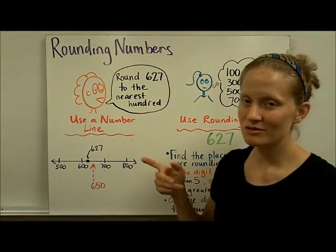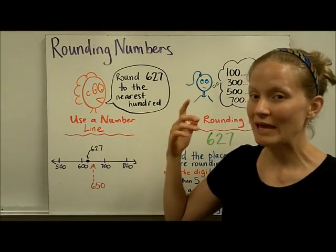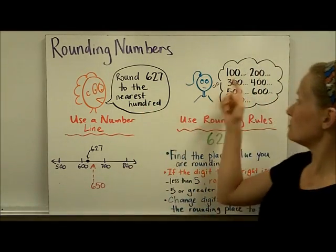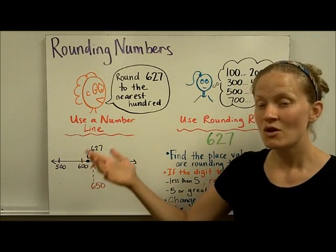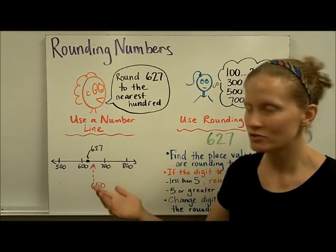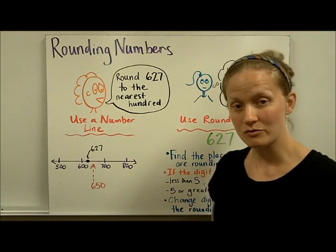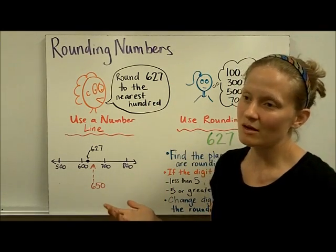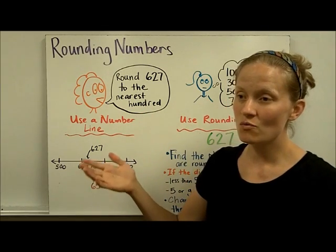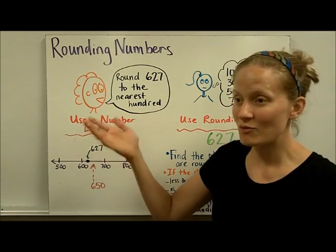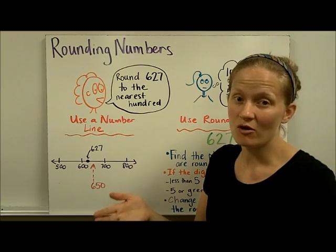When you're asked to round to the nearest hundred, you can think about it like this: if you counted by hundreds — 100, 200, 300, 400, 500, 600, 700 — which hundred would your 627 fall closest to? That's what rounding is talking about. Whatever place value you're given, if you counted by that place value, which one would it fall nearest?